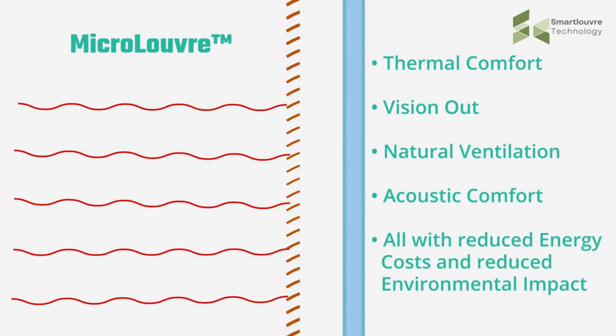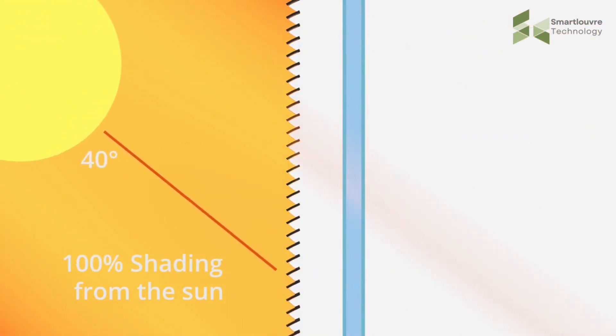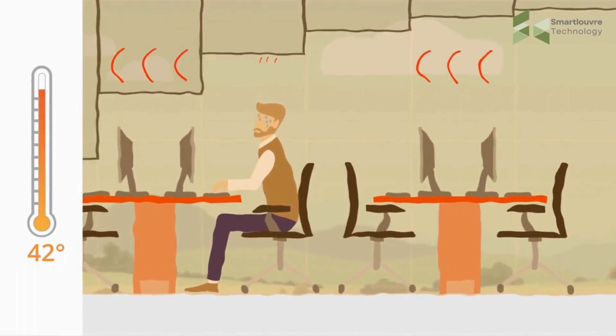These are angled and spaced to give 100% solar protection from the hottest summer sun. Micro Louver can lower room temperatures by up to a staggering 20 degrees Celsius, reducing and in some cases eliminating the demand for air conditioning.